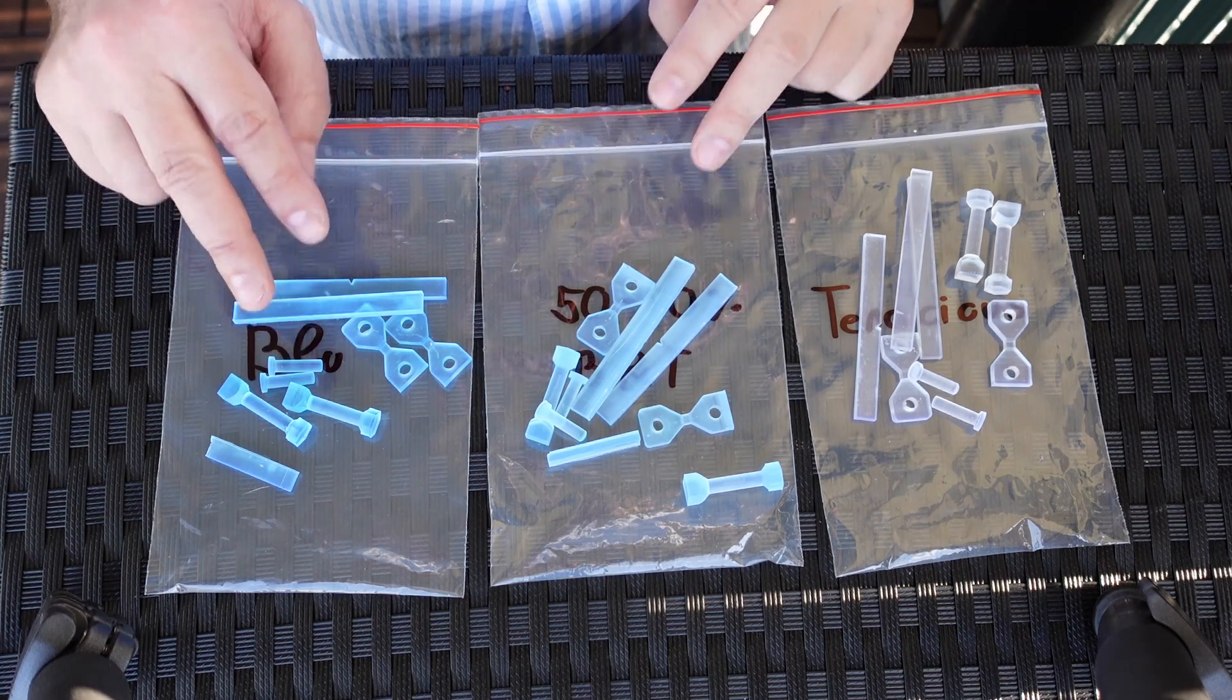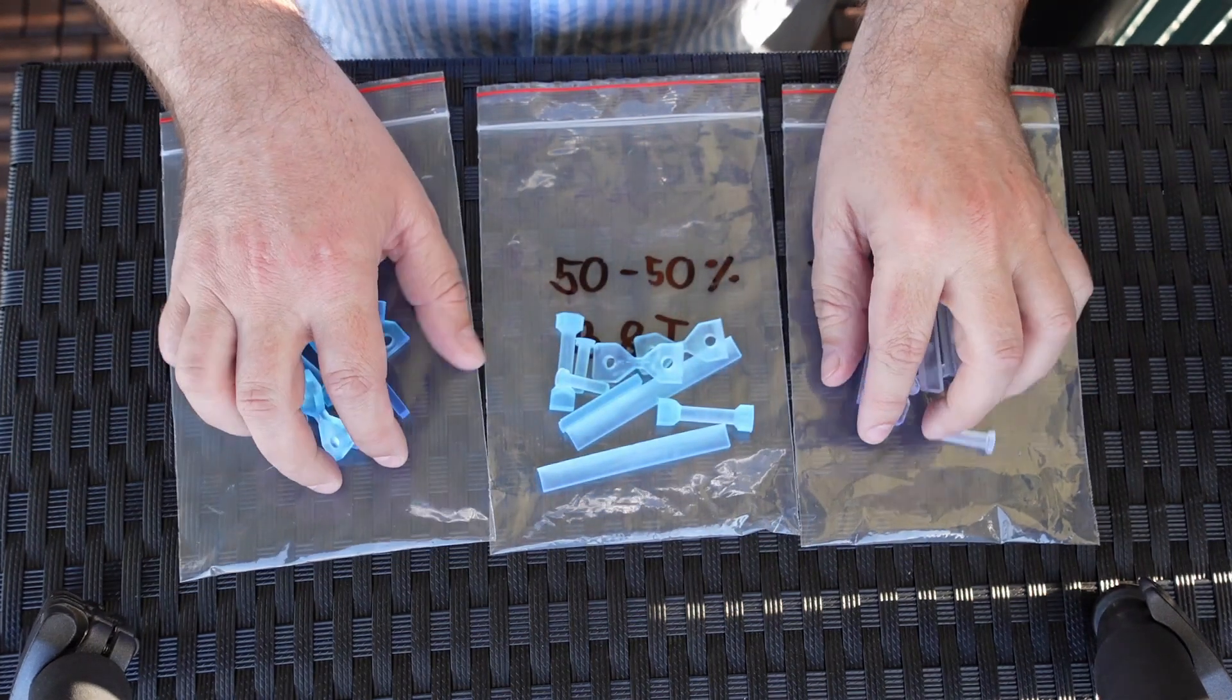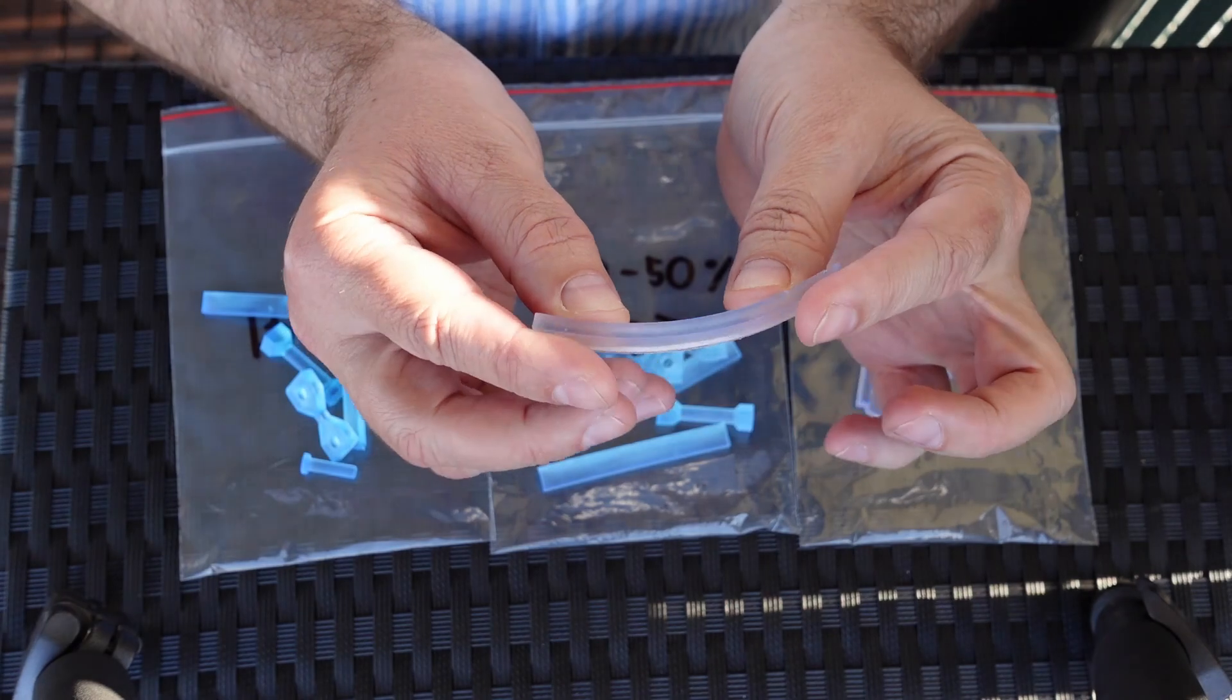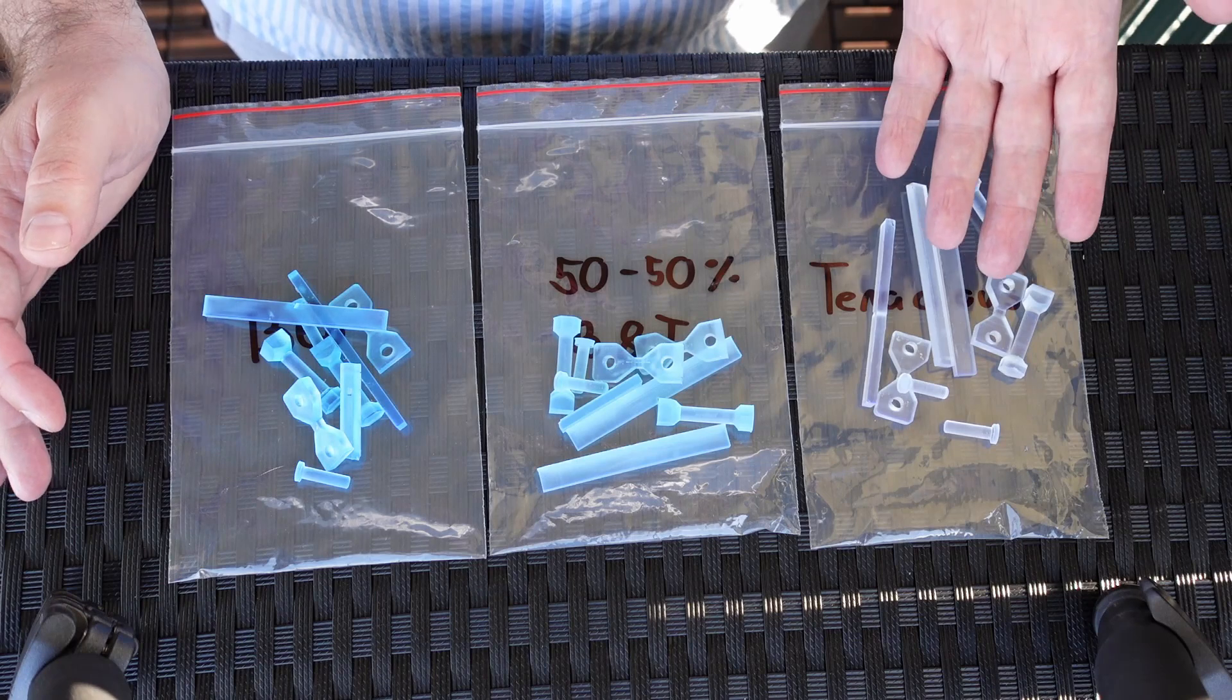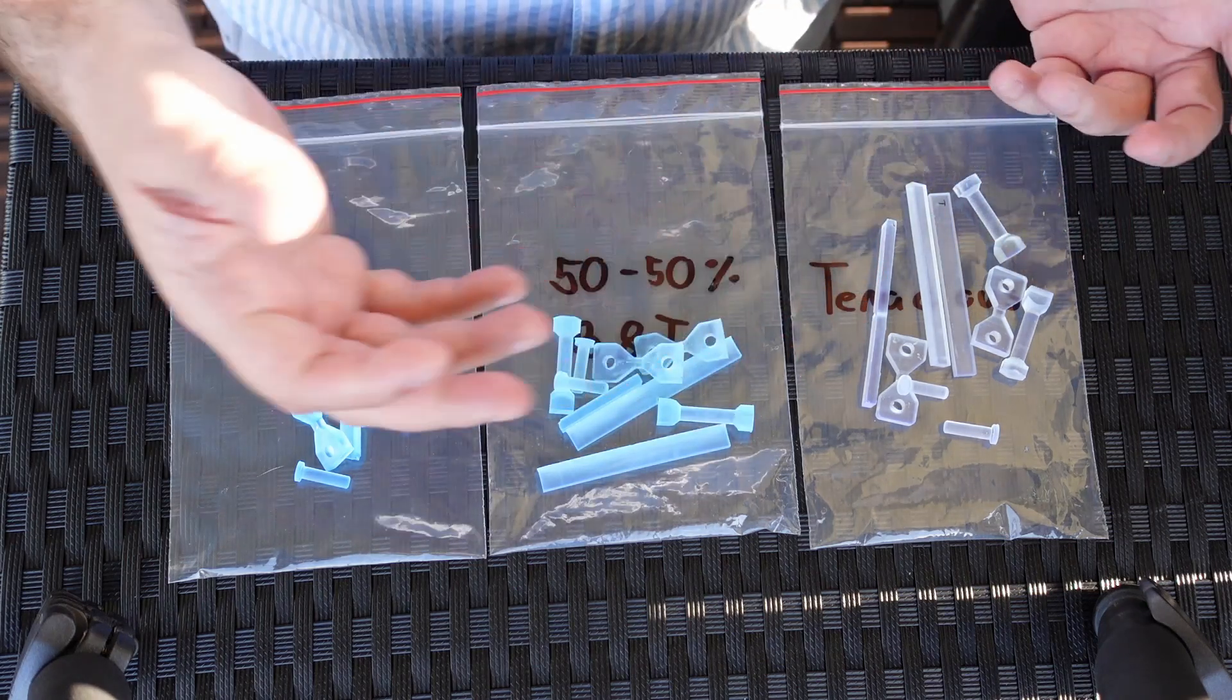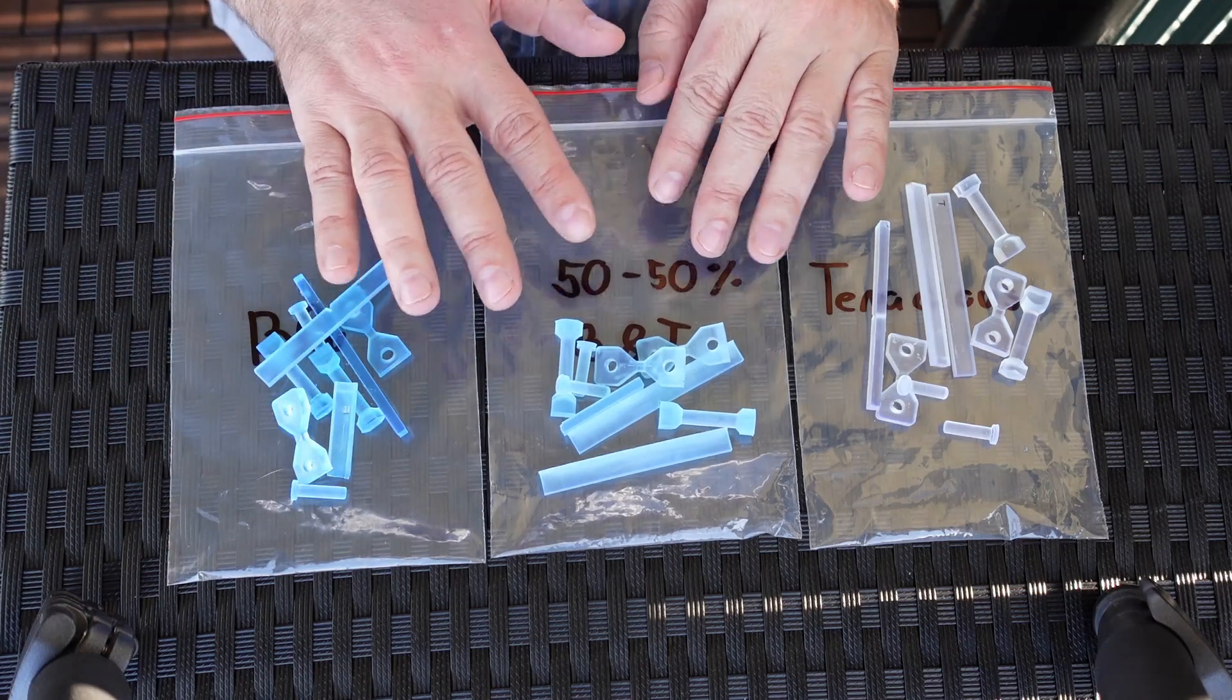I already started with the experiment, so that's why some test specimens are missing. But I have two test objects for each experiment. This is Siraya Blue and this is the Tenacious. And between them is a 50-50 mixture. Very interesting, the Tenacious - take a look at this, how flexible it is. It will be interesting. Probably some experiments I cannot even do with them.